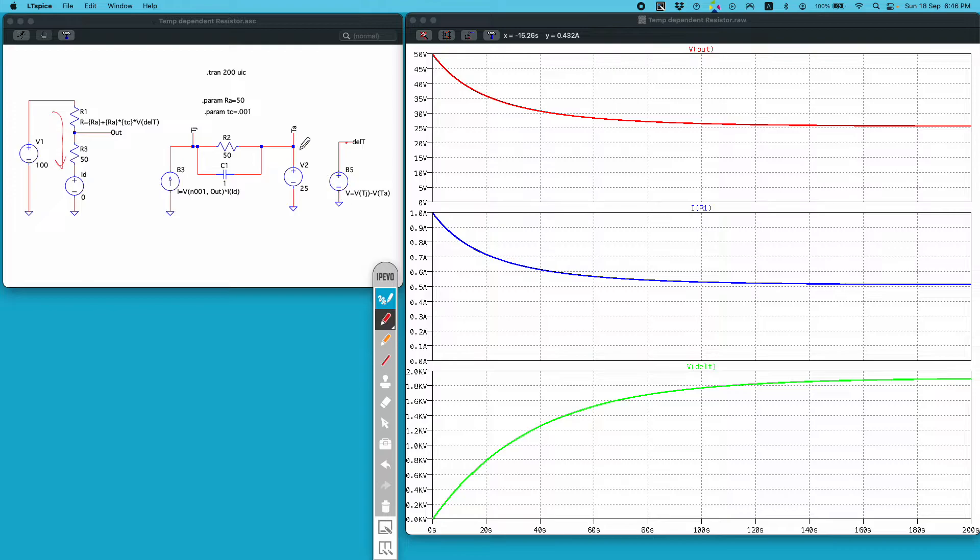The same current is flowing through R1 and R3, there is no load on this voltage divider network. And V delta T is the voltage at this node, that is the temperature difference between the junction or the temperature of this resistor and the ambient temperature.